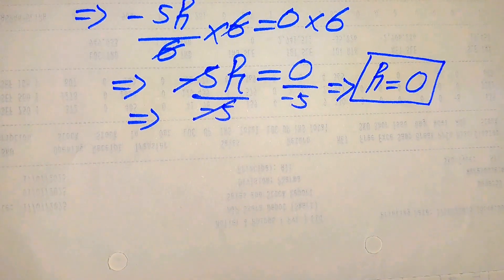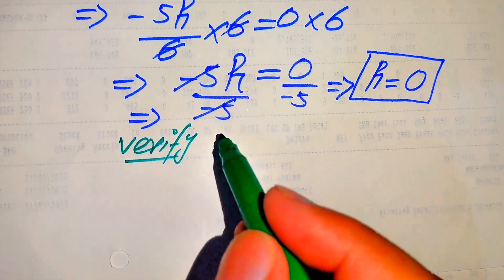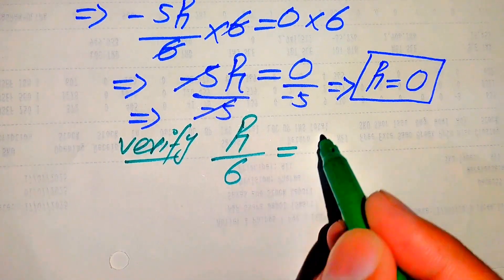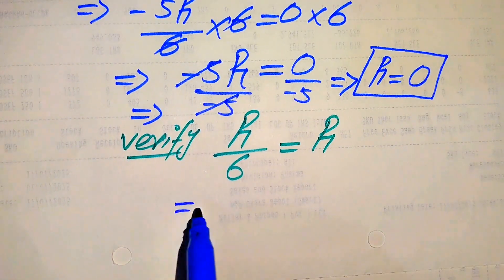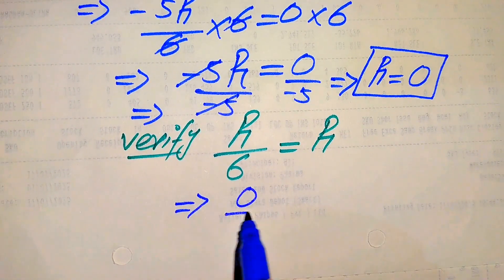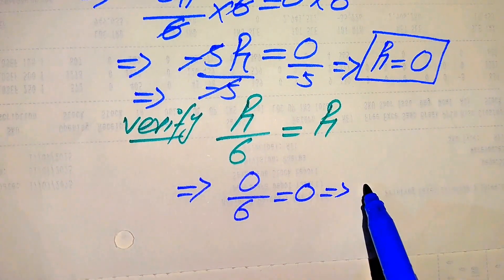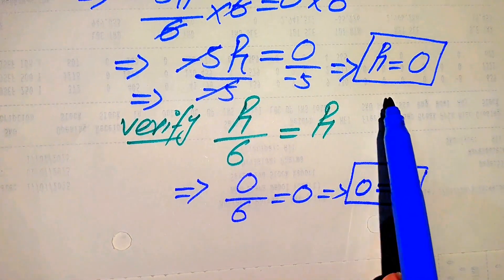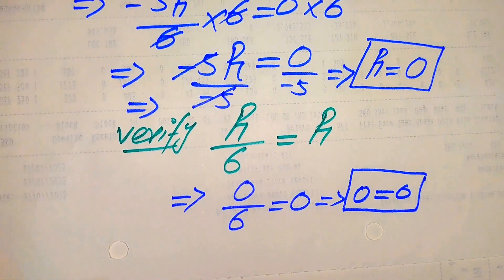Now we verify this value of h by checking whether it satisfies the given equation. We put h equals 0 on both sides: 0 over 6 equals 0. We already know that 0 over something equals 0, so we get 0 equals 0. This confirms that h equals 0 satisfies the given equation, and this is our final answer. Thank you so much for watching this video.